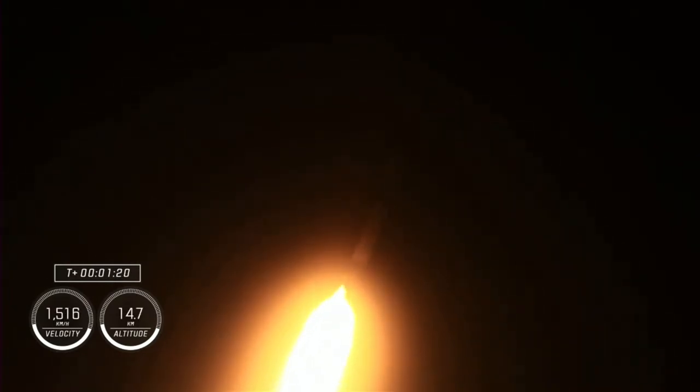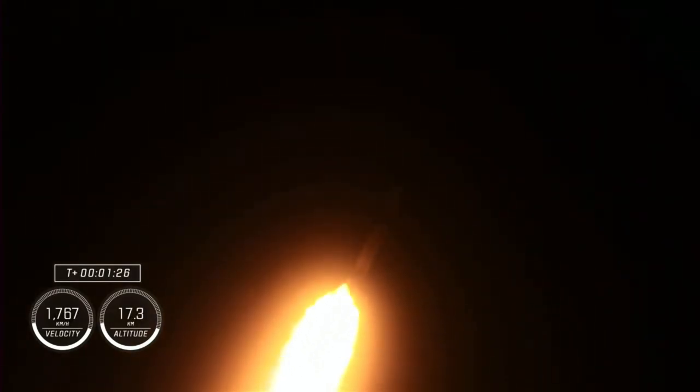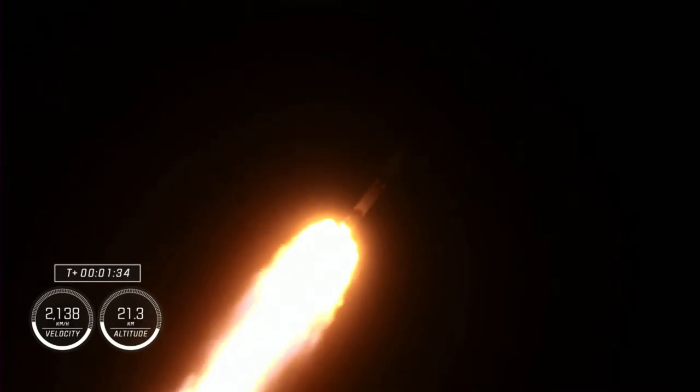We're standing by and there's our call out for max Q. Stage one throttle up. So right after max Q, we will begin to throttle those engines up again. Copy one bravo. One bravo. So we're in the second and final abort mode for the first stage. Continuing to get good performance though. The crew are already pulling in excess of two Gs.